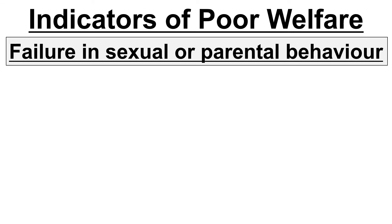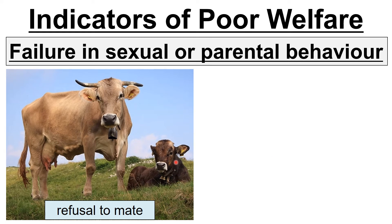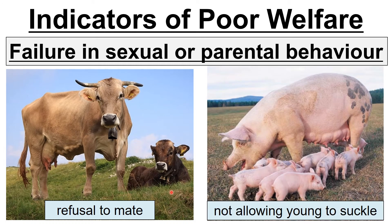The next indicator encompasses two things: abnormal sexual behaviour or abnormal parental behaviour. The first could be an unwillingness or refusal to mate — that would be an example of poor welfare. The second is parental behaviour, such as not allowing the young to suckle, which is obviously going to have an effect on their welfare too.